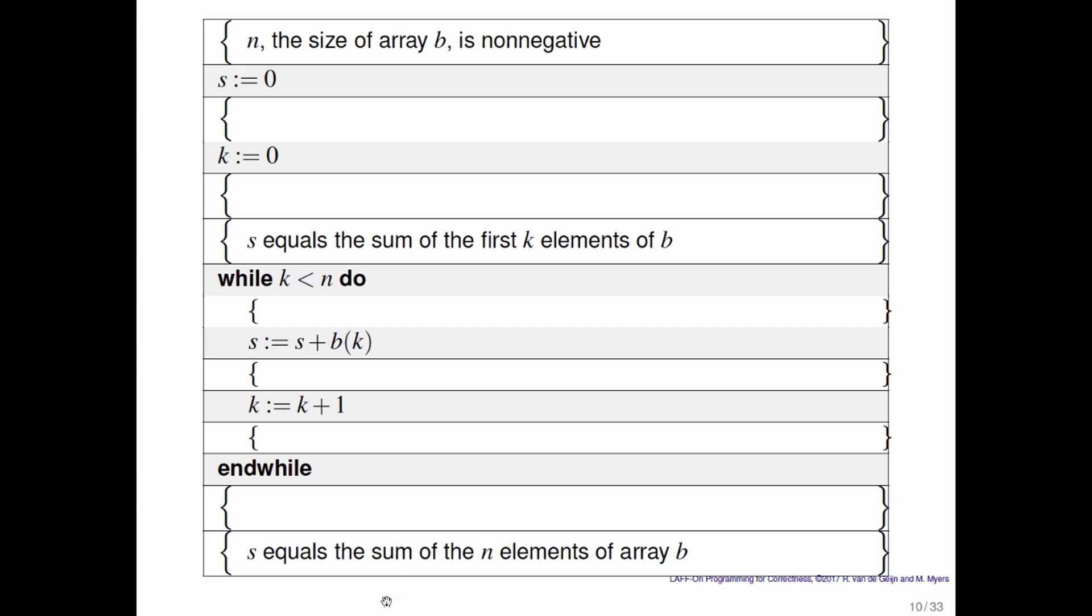About halfway into the program, just before the while loop, I inserted one more annotation. And there I say that s equals the sum of the first k elements of b. Obviously, as we are reasoning about a loop in which you compute that sum, that particular assertion is going to come up quite often.